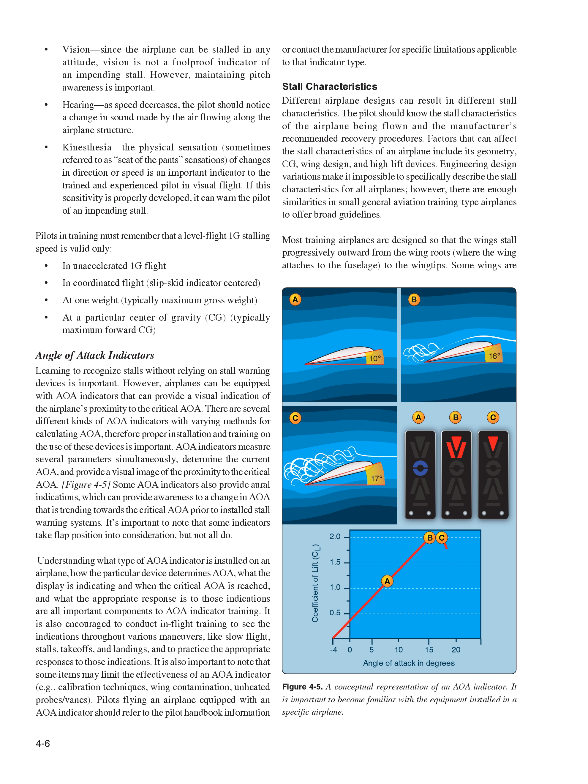Understanding what type of AOA indicator is installed on an airplane, how the particular device determines AOA, what the display is indicating and when the critical AOA is reached, and what the appropriate response is to those indications are all important components of AOA indicator training. It is also encouraged to conduct in-flight training to see the indications throughout various maneuvers like slow flight, stalls, takeoffs, and landings, and to practice the appropriate responses. Some items may limit the effectiveness of an AOA indicator — for example, calibration techniques, wing contamination, and unheated probes/vanes. Pilots should refer to the pilot handbook or contact the manufacturer for specific limitations applicable to that indicator type.